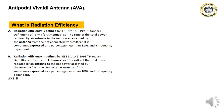Antipodal Vivaldi Antenna. Question: What is radiation efficiency? Choice A: Radiation efficiency is defined by IEEE Std 145-1993 as the ratio of total power radiated by an antenna to the net power accepted by the antenna from the connected transmitter, sometimes expressed as a percentage less than 100%, and is frequency-dependent. The answer is B.